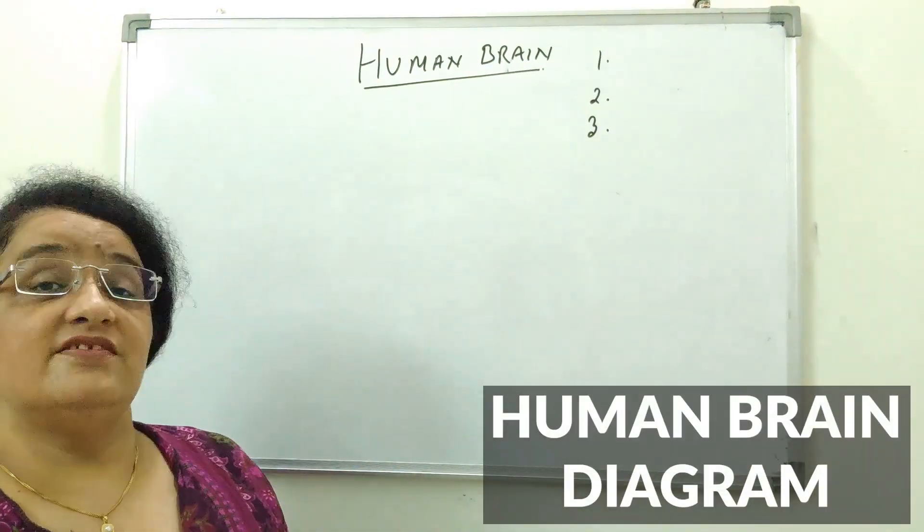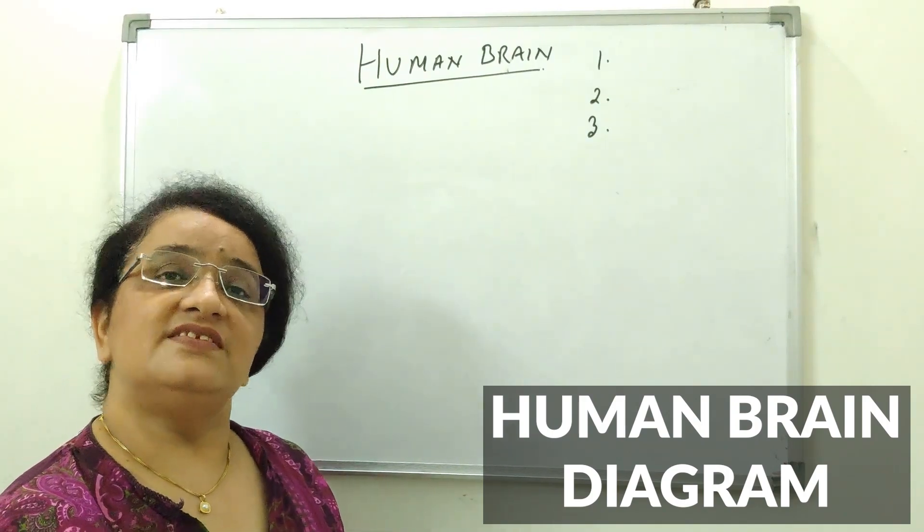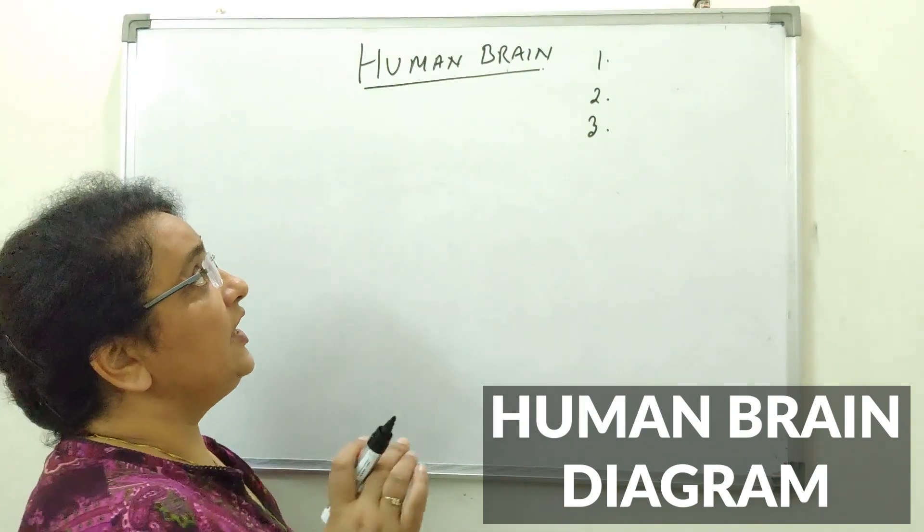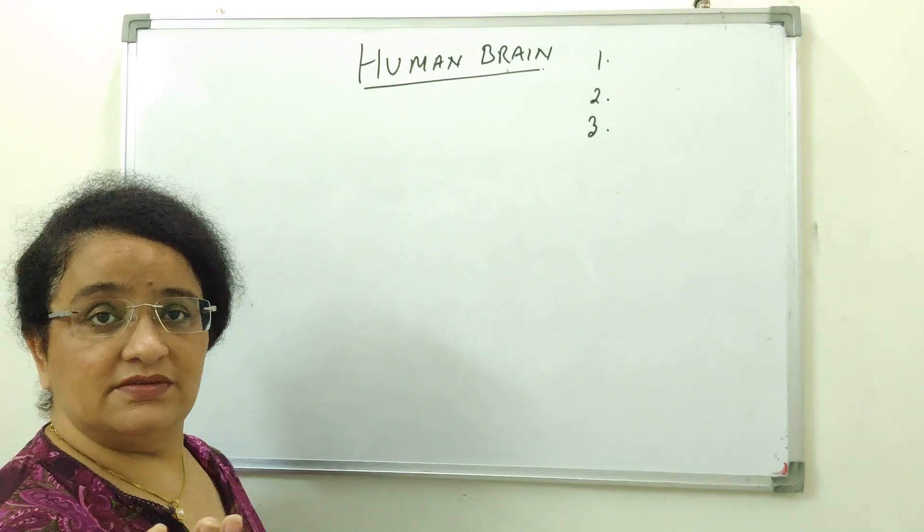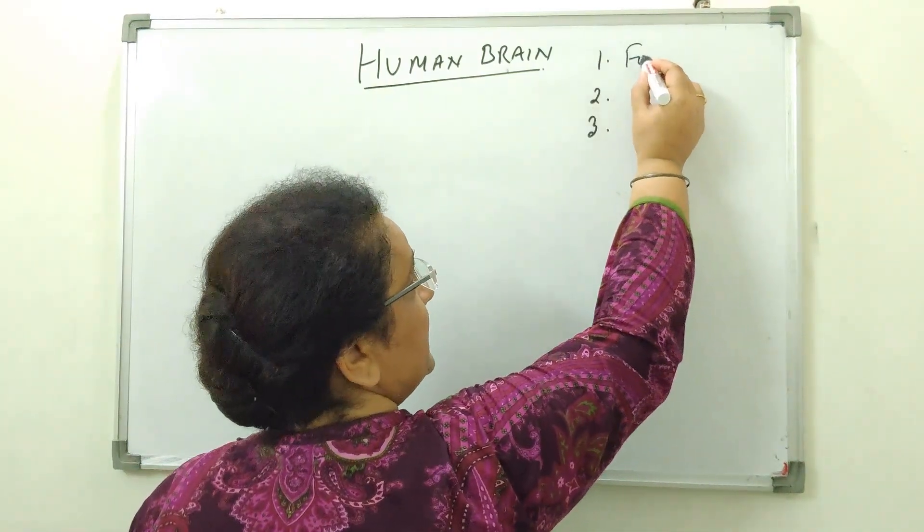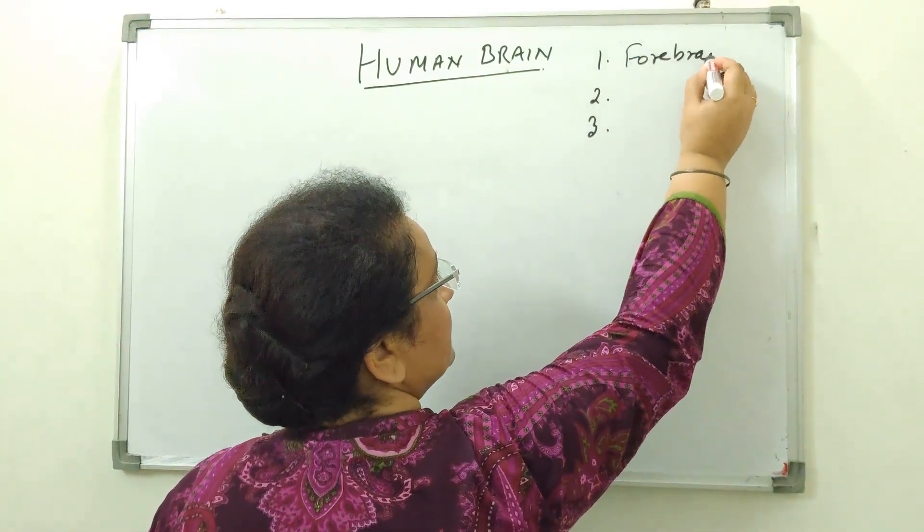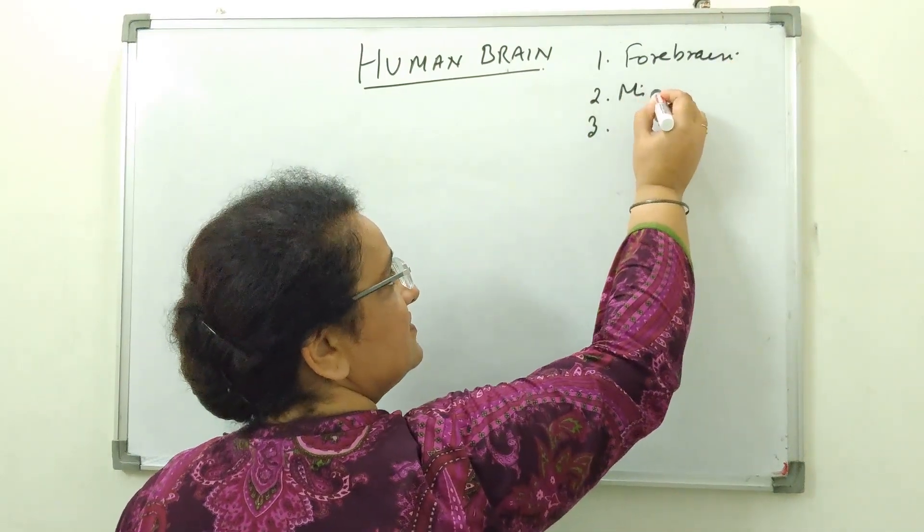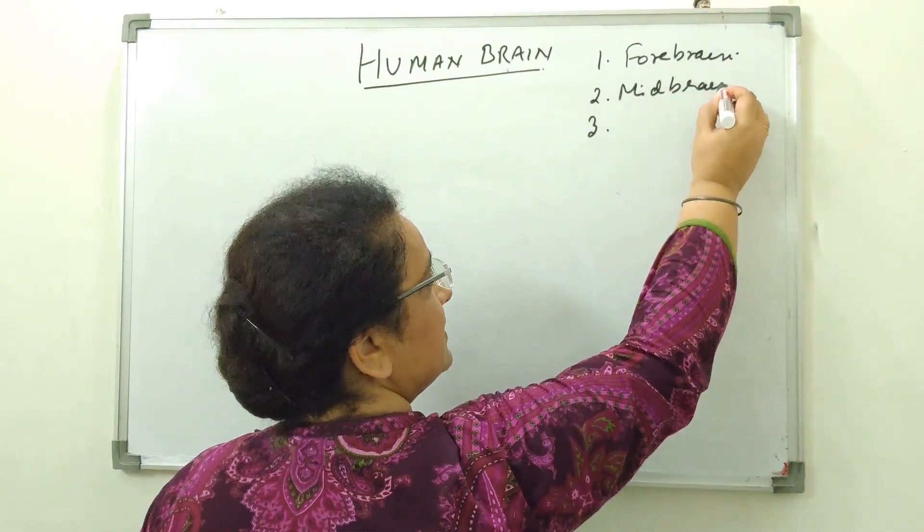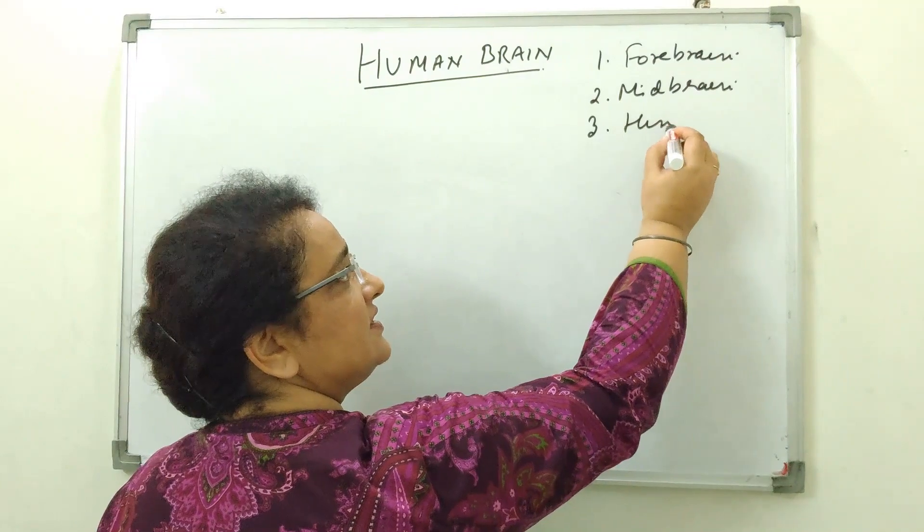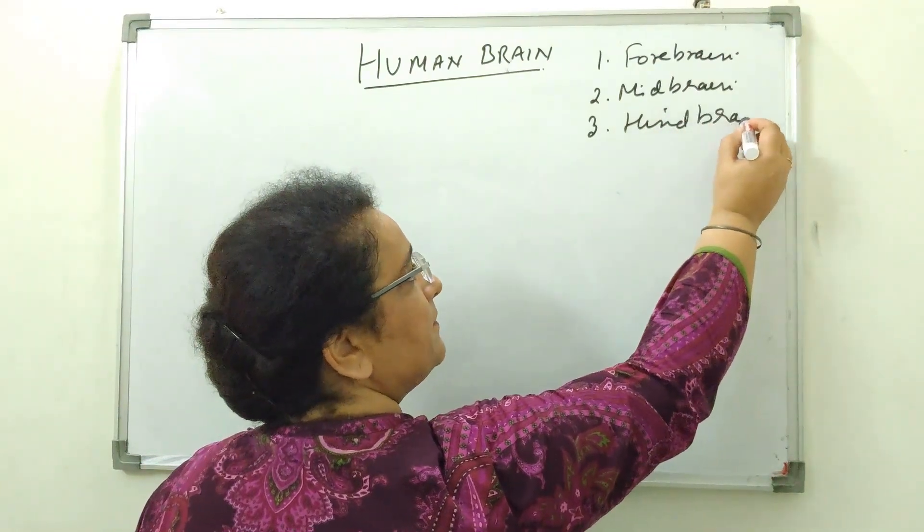Now human brain as you know is a part of the central nervous system and human brain has got three parts. First part is the forebrain, second is midbrain and third is the hindbrain.